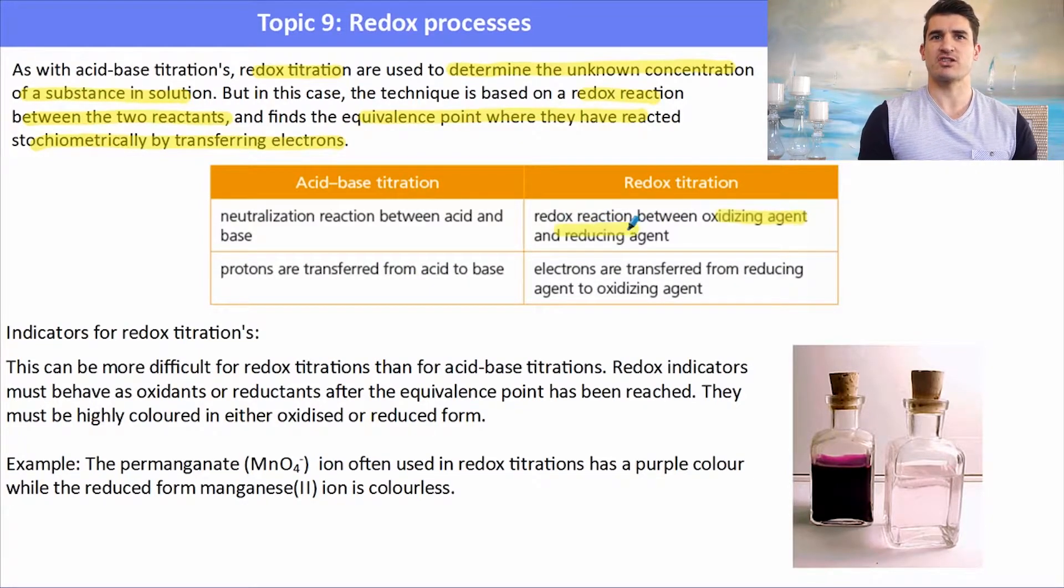So an acid-base reaction was a neutralization between an acid and a base and we needed an indicator. In a redox titration we use both the oxidant and the reductant and react those until the reaction has been completed.